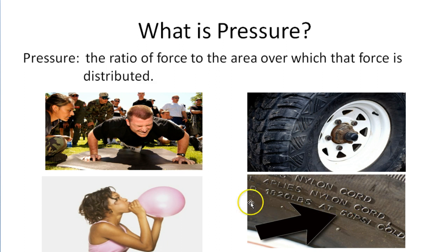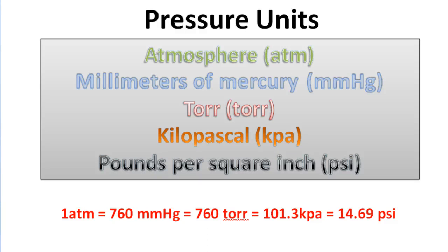Let's jump right in and take a look at some different units of measurement that we can use to measure pressure. We've got atmospheres or ATMs, we've got millimeters of mercury, we've got Torrs named after the Italian scientist Evangelista Torricelli, we've got kilopascals, and we've got pounds per square inch. These are five different units of measurement that we can use to measure how much pressure something contains.